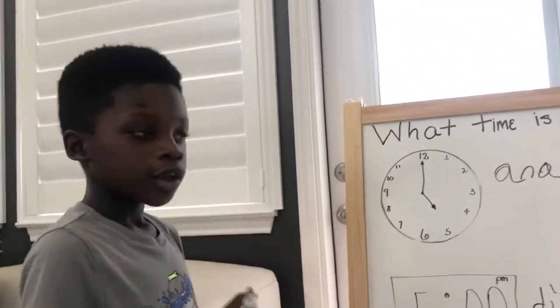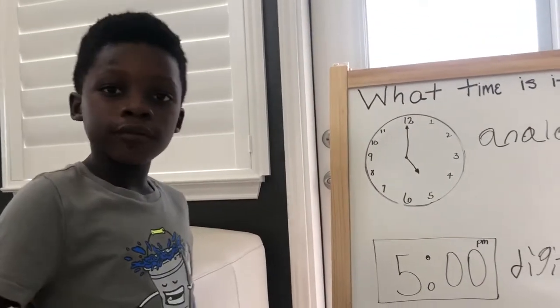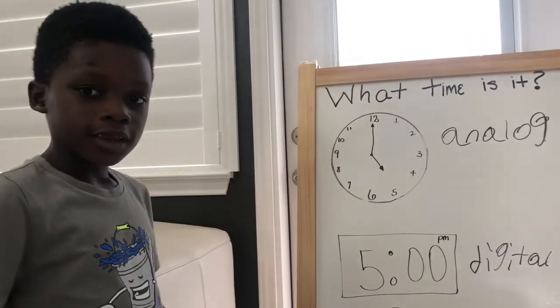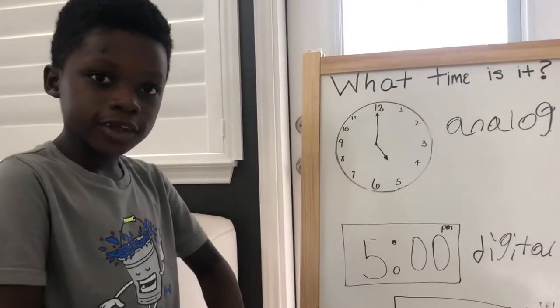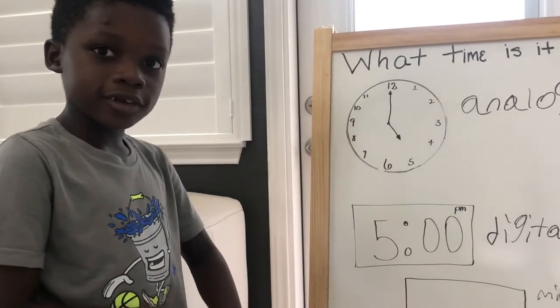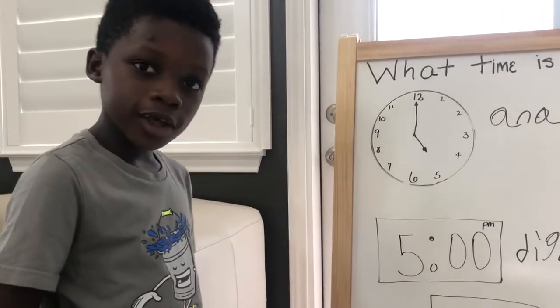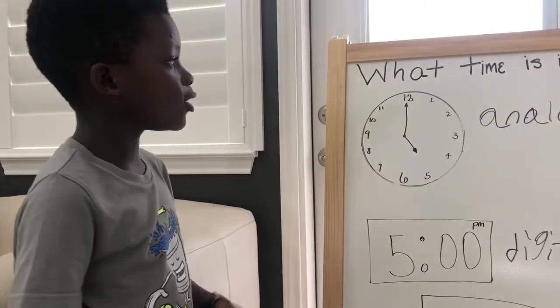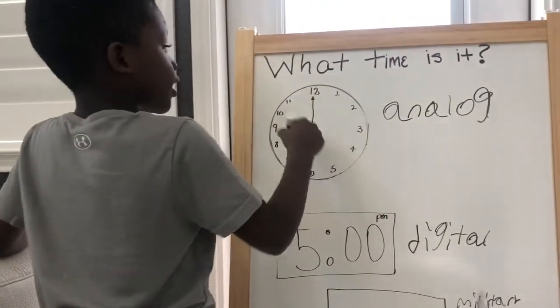So like you start from one in the night, then two, three, four, five, six, seven, eight, nine, ten, eleven, twelve, then you go to 13, 14, 15, 16, 17, 18, 19, 20. So 13 is one. So on this clock it starts from 1 a.m.